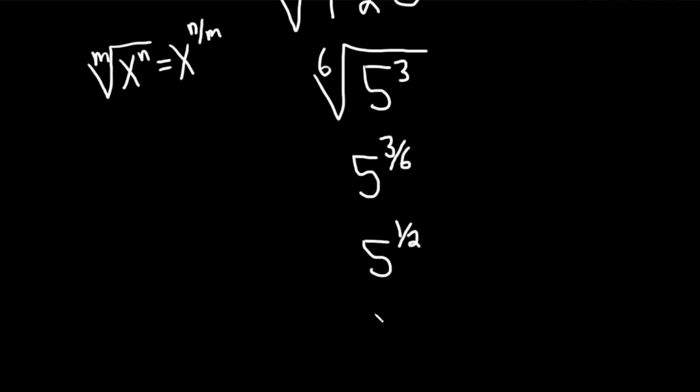And now we can write this as, using this formula, as the square root of 5, right? This is your m here, the 2, so it goes here. Then here's your 5 to the 1. You see it's 1 over 2, 1 over 2. But whenever it's the square root, you never write it. So this is just the square root of 5.